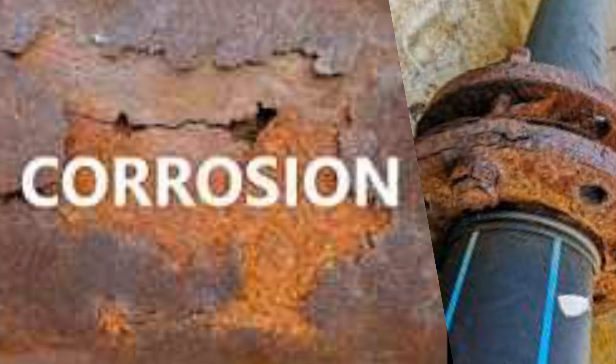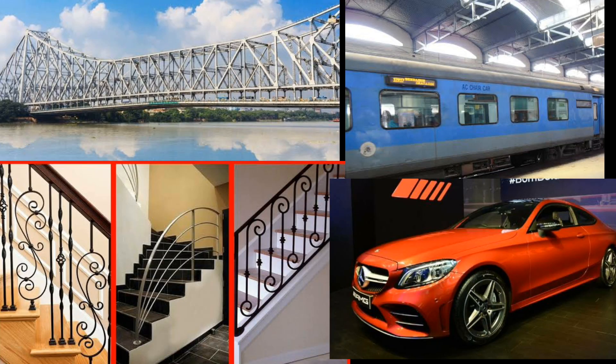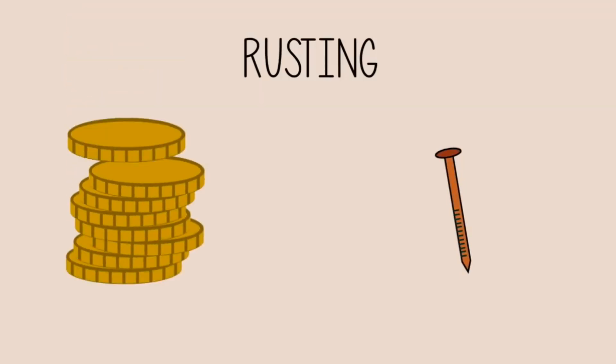Rusting is actually a corrosion of metals like iron and steel, as it converts a refined metal into a chemically stable form such as oxides and hydroxides. So we can say rusting is an example of a chemical change. Rusting can be very costly if we have to constantly replace iron items, so it must be prevented.